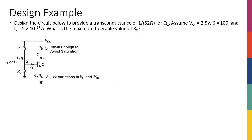Let's look at this example. The question asks us to design the biasing circuit with emitter degeneration so that we get a transconductance gm of 1/52 Siemens for Q1. We're assuming VCC is 2.5 volts, beta is 100, and IS is 5×10⁻⁷⁰. The last part asks: what is the maximum tolerable value of Rc before the transistor goes into saturation?